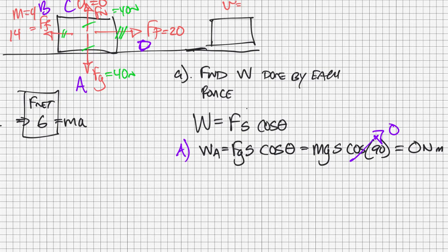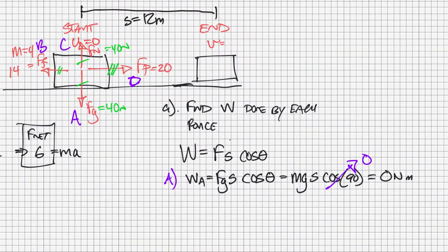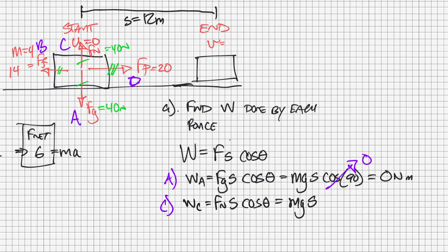The displacement is in the horizontal direction and gravity is in the vertical direction, so the angle is 90 degrees, giving zero. The same applies for the normal force. The work done by the normal force is the normal force times distance times cosine of 90 degrees, which is also zero newton meters — the normal force is perpendicular to displacement as well.